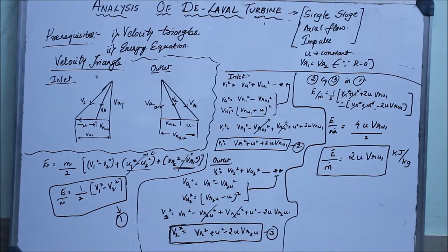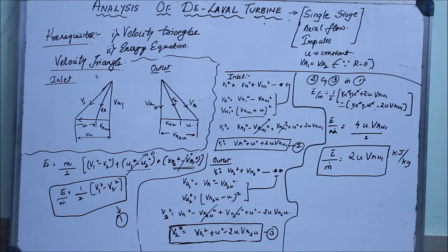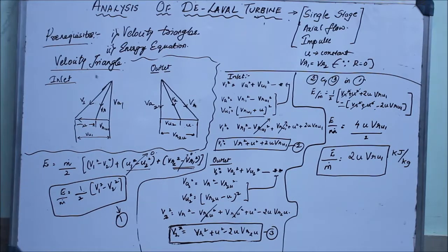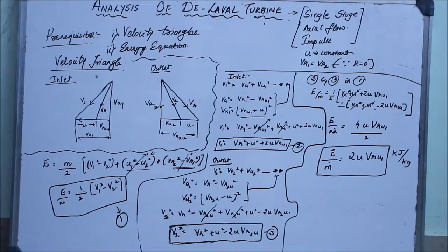Coming to the analysis of a D-level turbine, we should know the velocity triangles and also the energy equations — these are the prerequisites. I will just directly draw the triangle and write the equation and will not go into detail about how the triangles are formed.